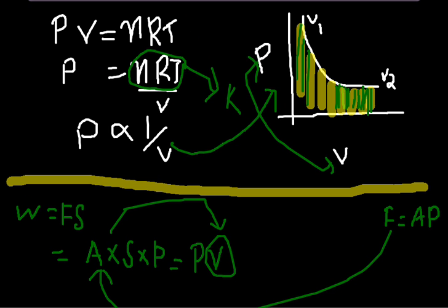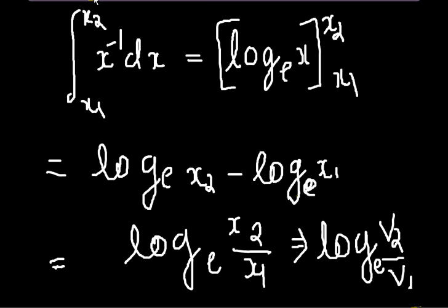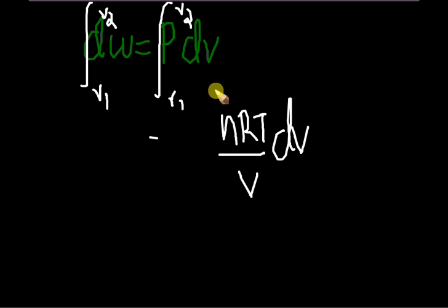We know that P is equal to nRT by V. I am going to substitute that value right here for P. So, we can write nRT by V DV integral V2, V1. I got this equation for work done.